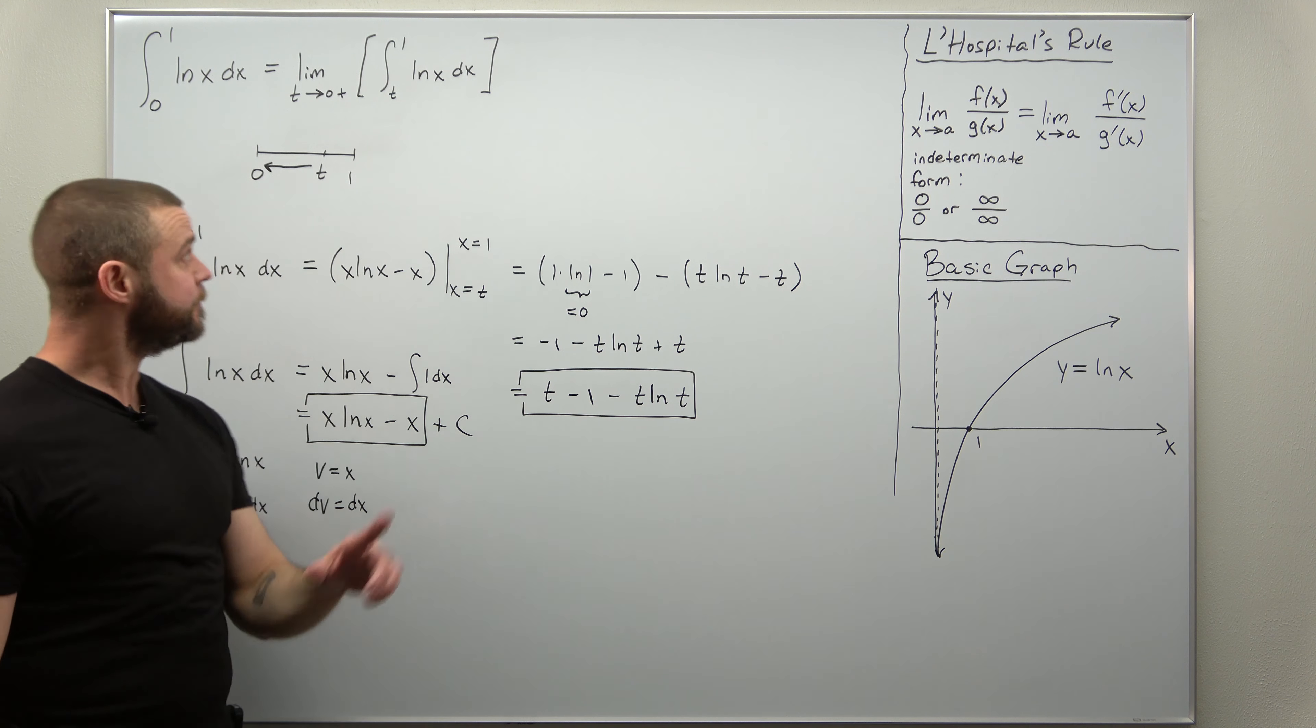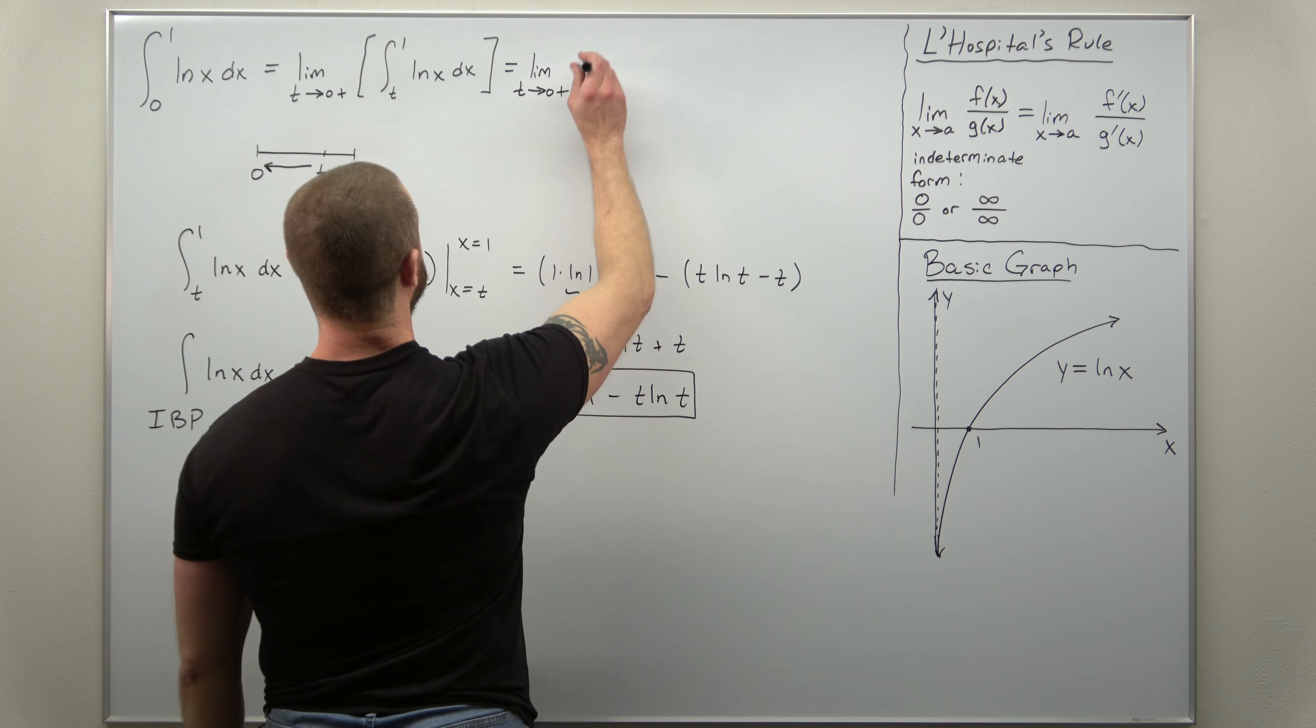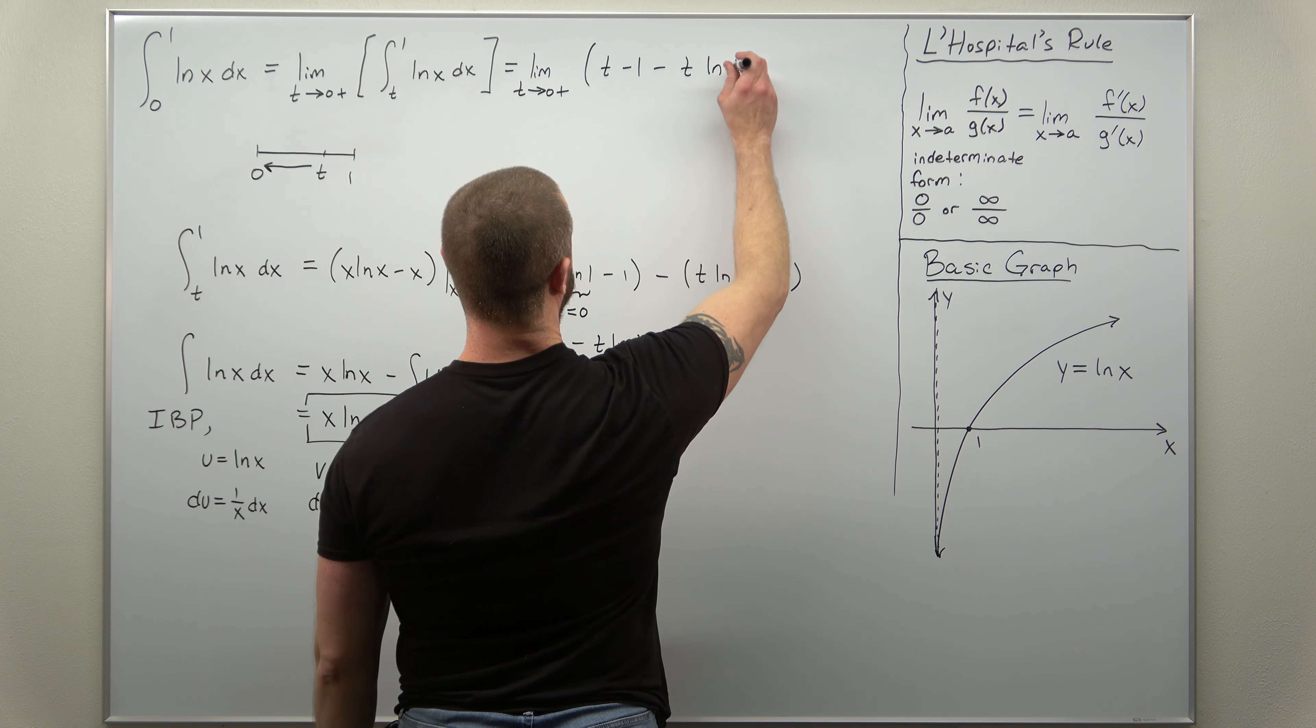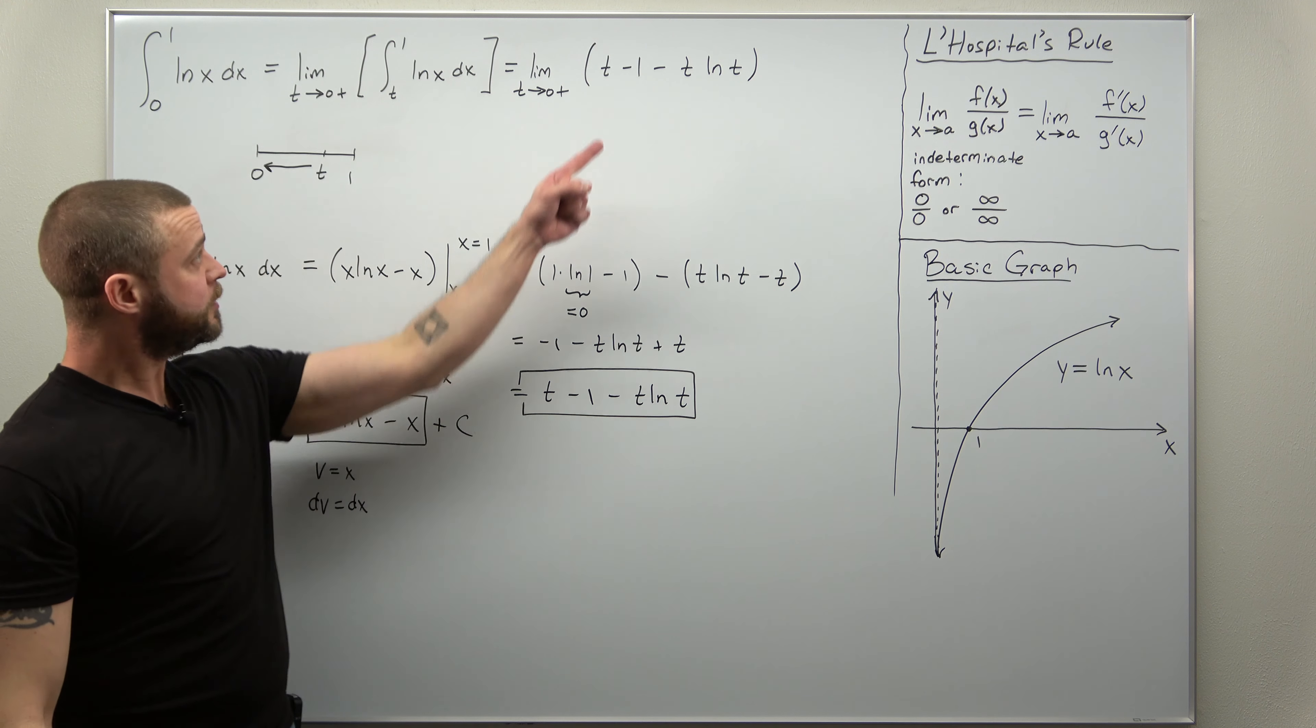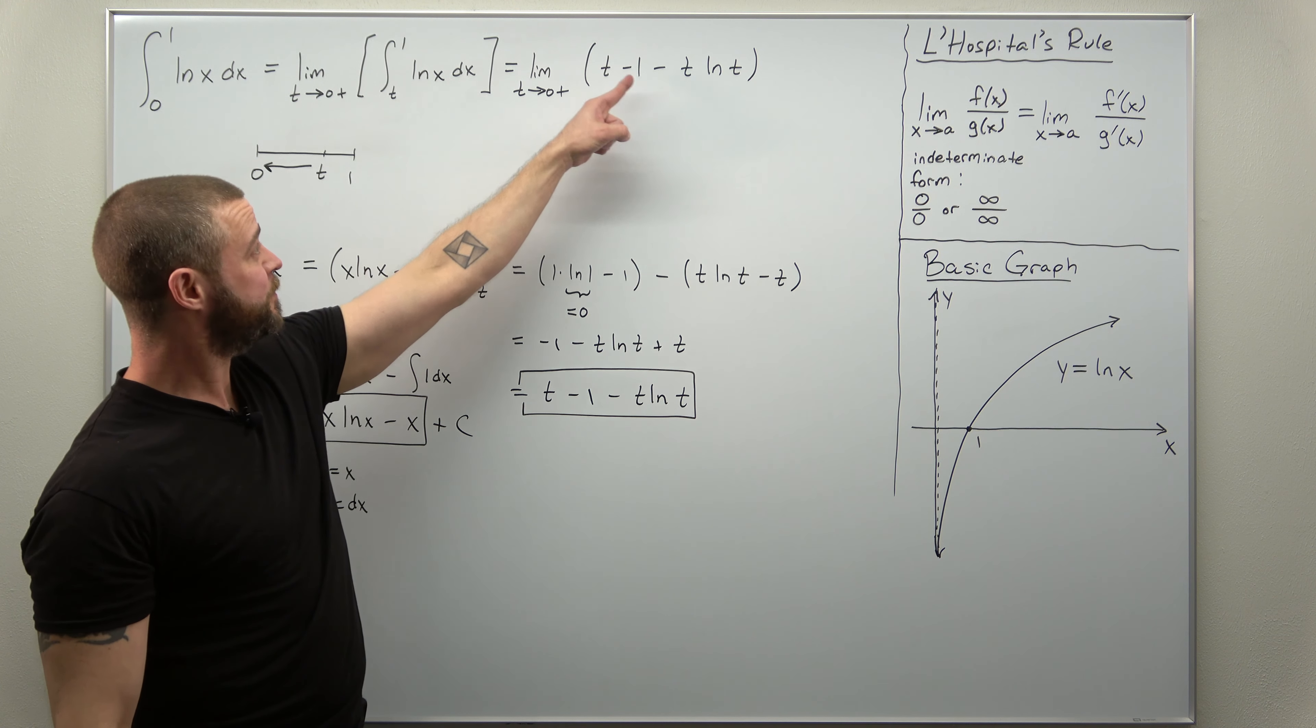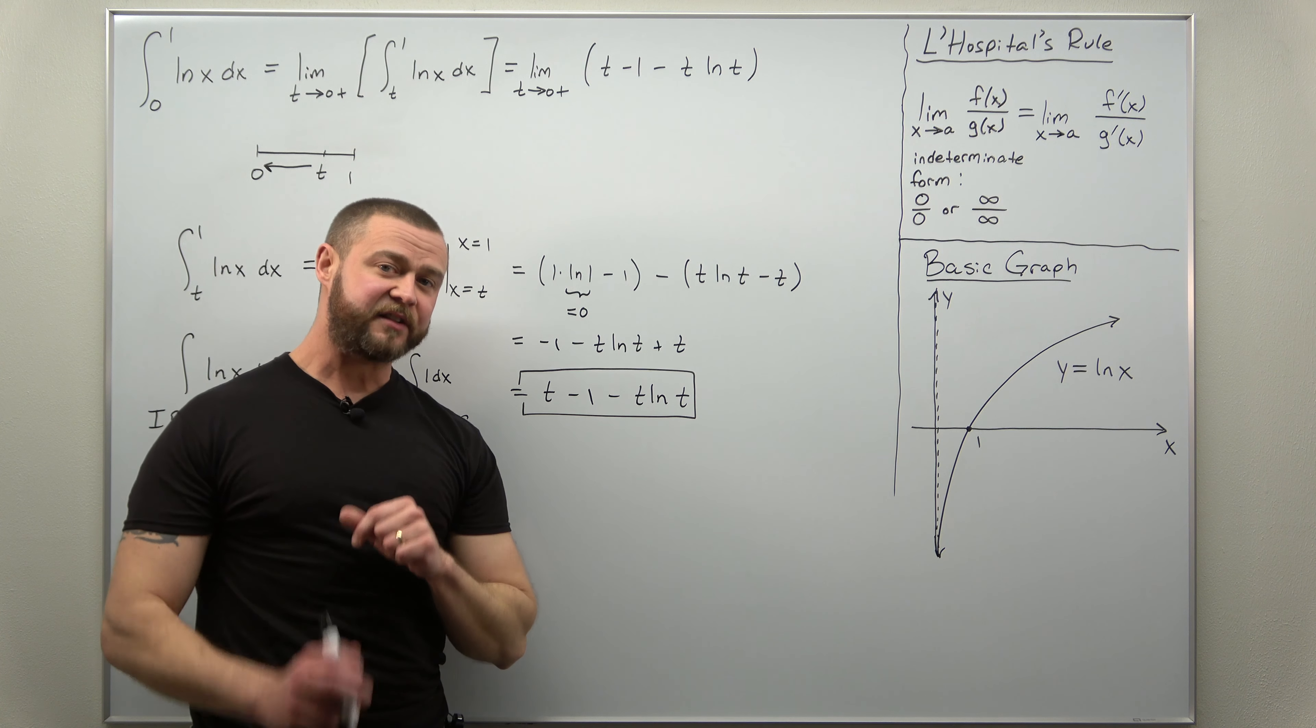So the only thing we have left is the limit. So let's go ahead and plug that in. We have a limit as t approaches 0 from the right. And we're taking the limit of t minus 1 minus t ln t. All right. Now, two of these terms are very easy to evaluate as t approaches 0. Here, t, as t approaches 0, that just goes to 0. Negative 1, that's a constant. That'll stay as negative 1 as t approaches 0. But it's the t ln t term that's a little bit tricky.